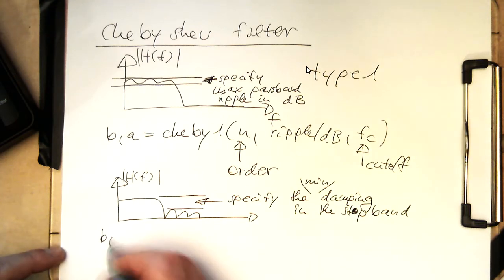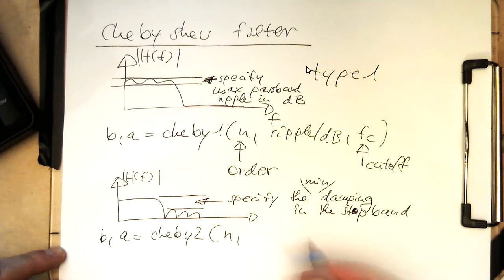And so then we have B comma A and then Chebyshev 2 in this case here. And then again, N is the order. And then minimum damping in decibel. And again, the cutoff frequency here.